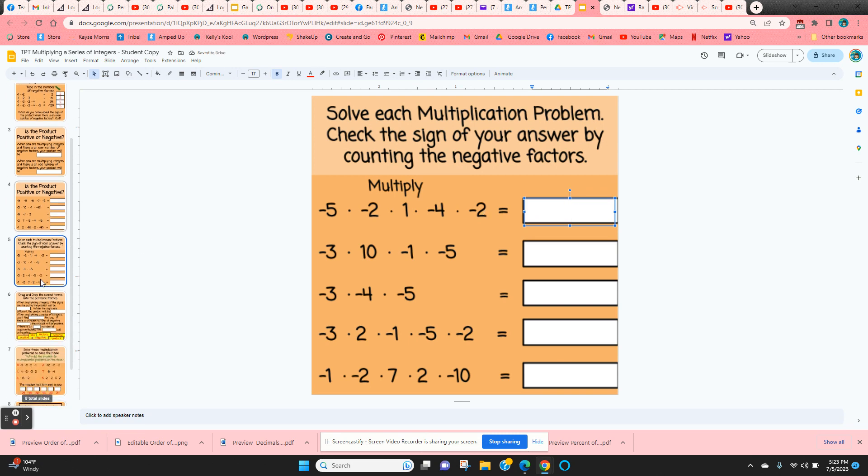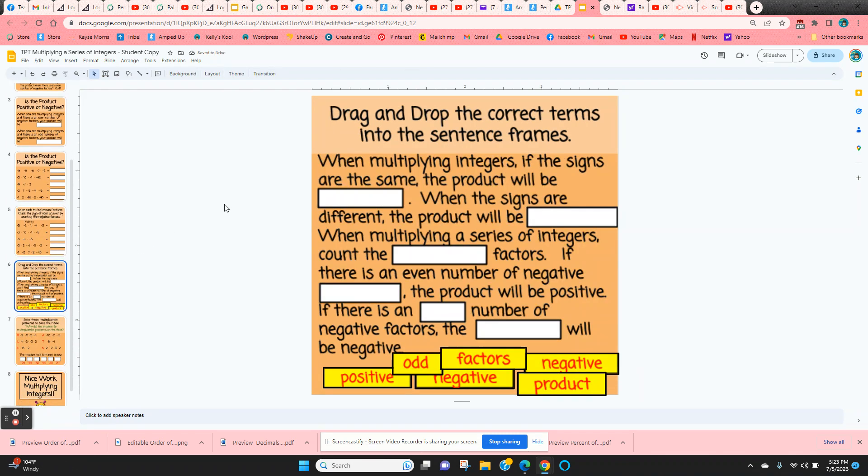On the next slide they've got some sentence frames. They're going to be moving these words into the correct place in the sentence frame. This is just a review of everything they've just done. To move these words, they just click and hold on the edge and then they can move them into place.